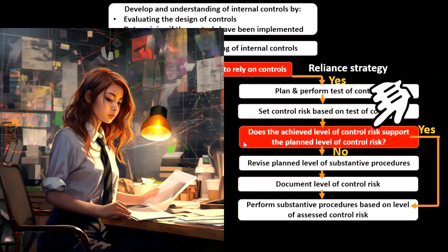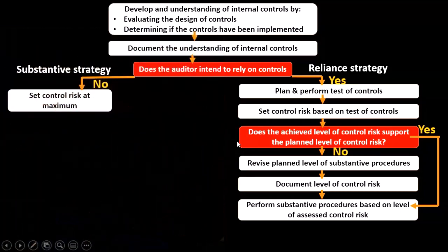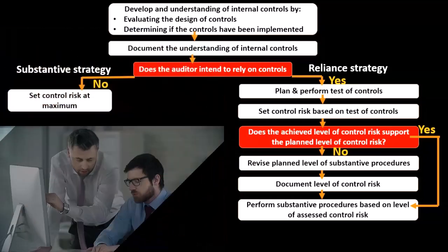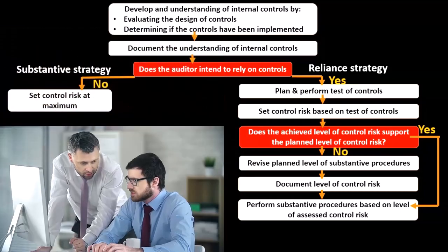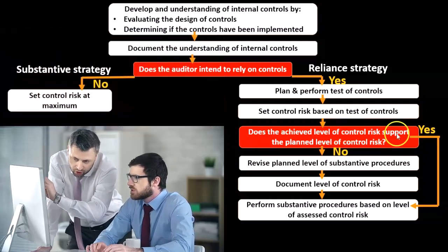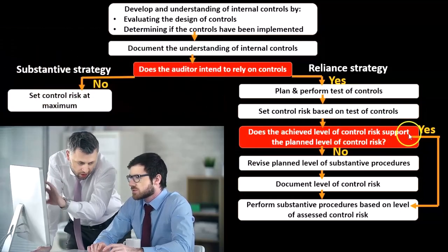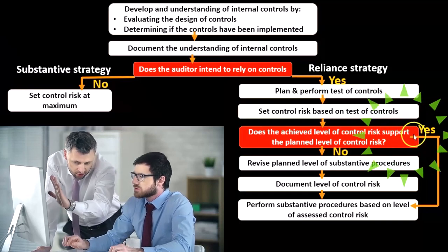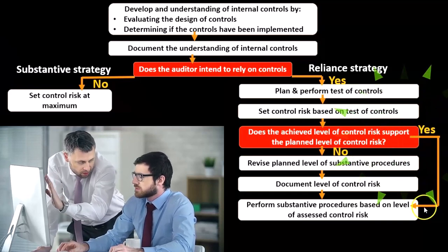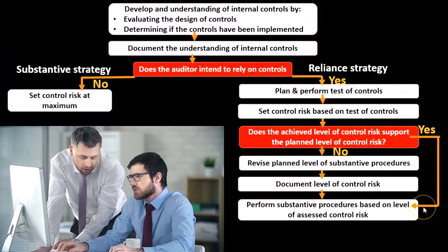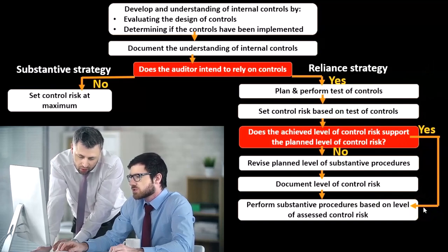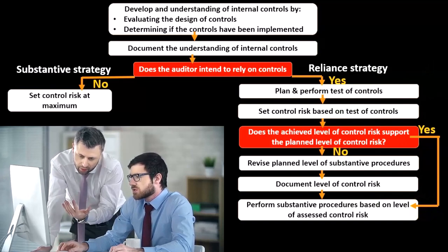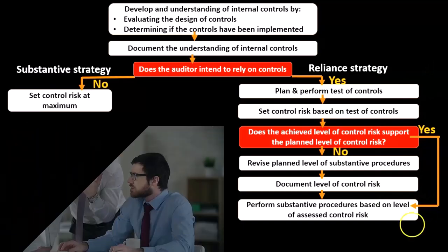Going back to the question — does the achieved level of control risk support the planned level of control risk? If the answer is yes, then we're going to rely on those controls and go straight to performing the substantive procedures based on the level of assessed control risk that we have determined.